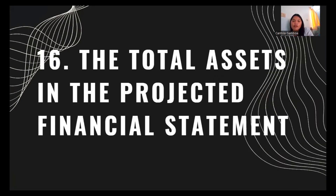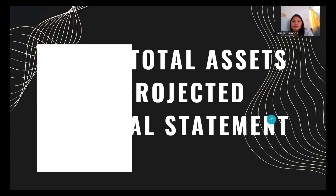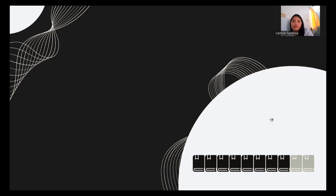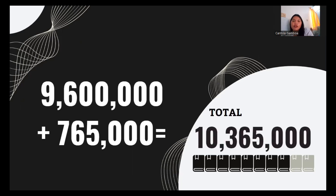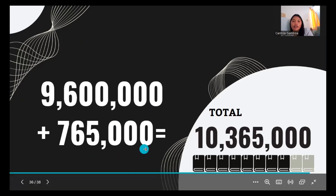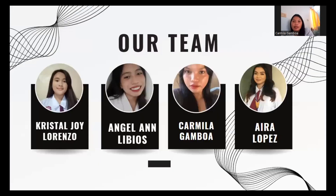Number sixteen, the total assets in the projected financial statement. Total assets of 9,600,000 plus the expected increase in current assets of 765,000 equals 10,365,000. And that concludes our discussion for today. Hope you learned something.